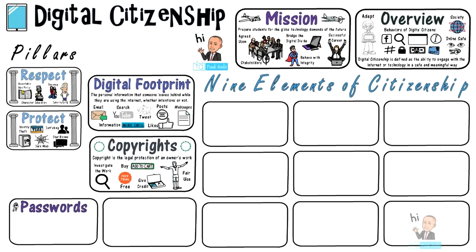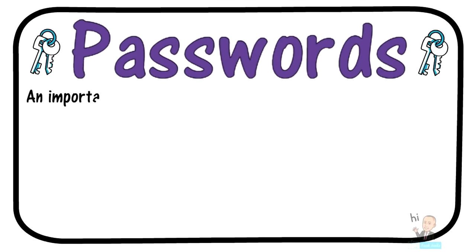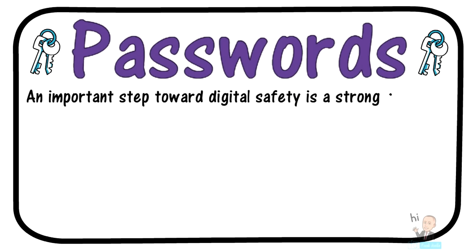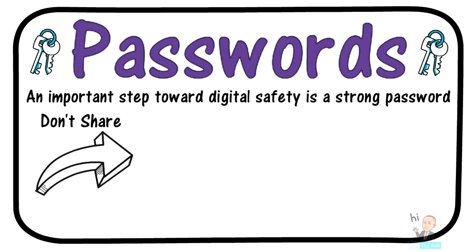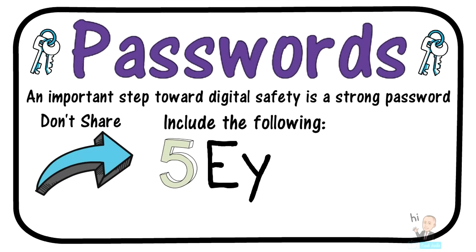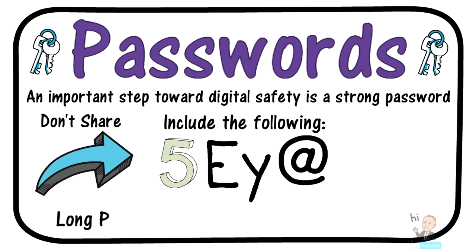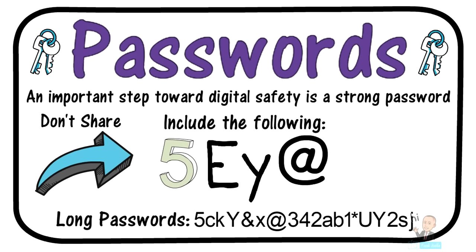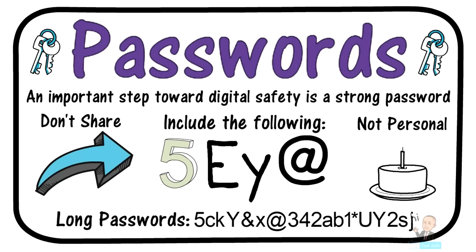The next section is developing passwords for safety and protection. An important step towards digital citizenship is having a safe password. The first rule is don't share that password with anyone — that includes best friends, girlfriends, even siblings. Keep it private. When creating a strong password, you should include numbers, capital letters, lowercase letters, and symbols such as the at sign or a percentage sign. Long passwords are better than short passwords. Lastly, avoid using personal information for those passwords — for example, don't use your birthday or your mother's name, as these can be hacked by someone close to you.